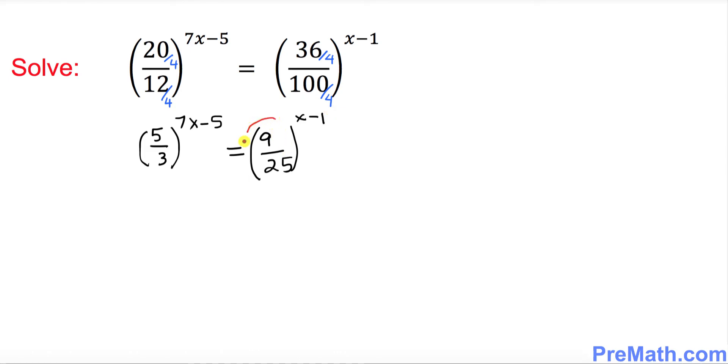The next step: look at this fraction 9 over 25. This 9 could be written as 3 to the power 2, and 25 could be written as 5 to the power 2. So I can write this as 3 over 5 to the power 2, and then we have another exponent which is x minus 1. On the left hand side we already have 5 over 3 to the power 7x minus 5.